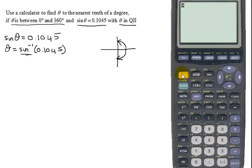Now all I have to do is put this in the calculator. Inverse sine means second sine of 0.1045, close parentheses, and then hit enter. The angle I'm looking for in quadrant 1 is 5.99836.